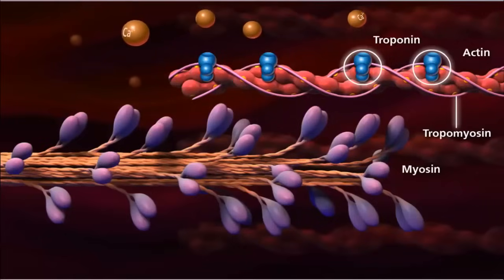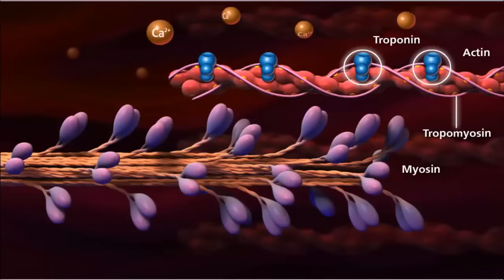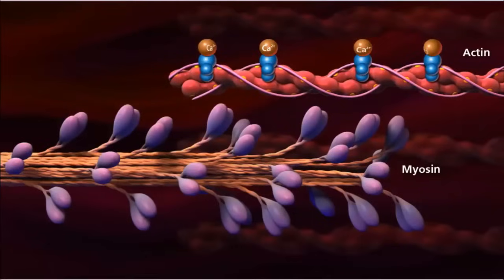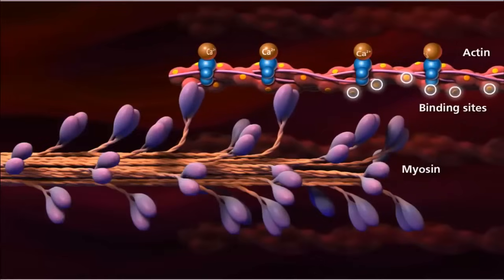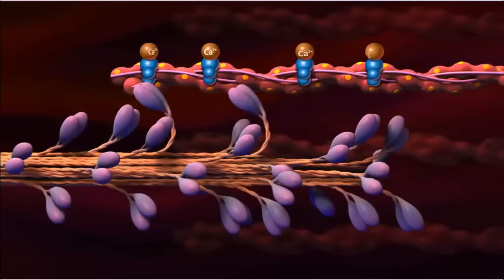When calcium ion levels are high enough and ATP is present, calcium ions bind to the troponin, which displaces tropomyosin, exposing the myosin binding sites on actin. This allows myosin to attach to a binding site on actin, forming a cross-bridge.